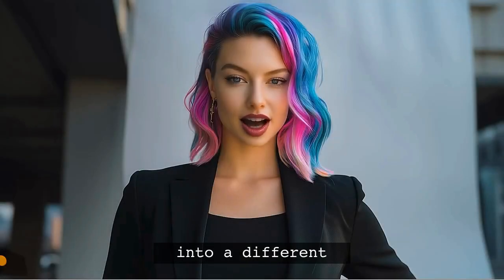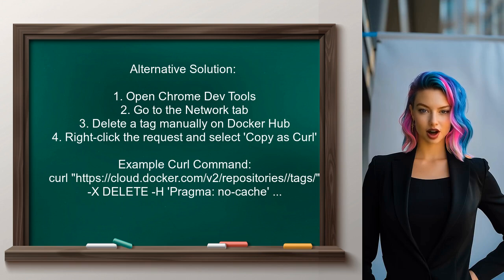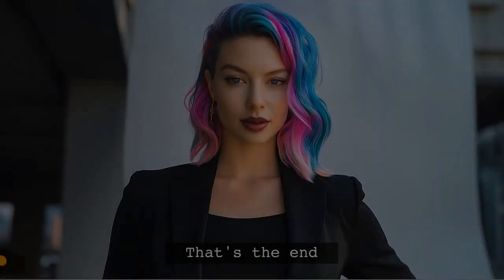Finally, you send a delete request to the repository's URL, including the token in the headers for authentication. Now let's dive into a different answer from another user. An alternative approach involves using Chrome's developer tools. Open the DevTools and navigate to the Network tab, then manually delete a tag from Docker Hub. You'll see a request in the Network tab — right-click it and select Copy as Curl. This will give you a command that looks something like this.